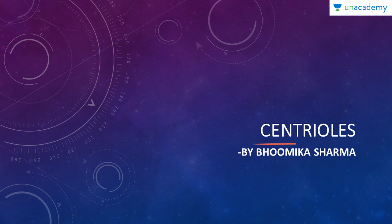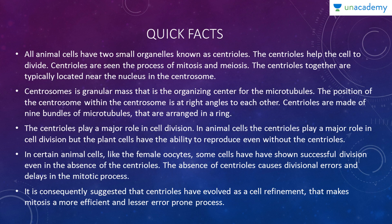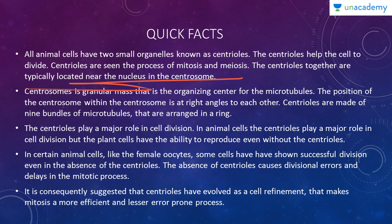In this lesson we're going to start with a very interesting topic: centrioles. Centrioles are another organelle associated with cell division or the cell cycle. Some quick facts: all animal cells have two small organelles termed as centrioles. The centrioles help the cell to divide, and they are seen in the processes of mitosis and meiosis.